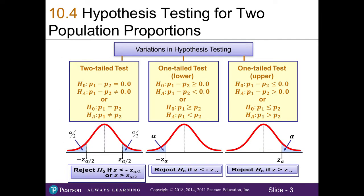With hypothesis testing, we are typically looking at two-tailed tests, one-tailed lower-tailed tests, or one-tailed upper-tailed tests. This is going to look very similar to what we learned about hypothesis testing for two population means — it's just now we're doing proportions. So wherever you saw mu for the mean, we have now replaced it with little p for proportion.